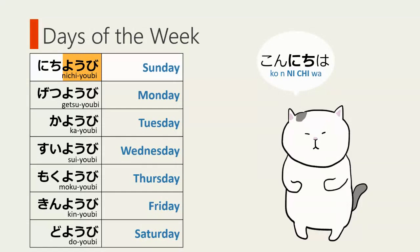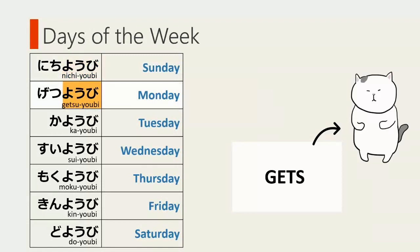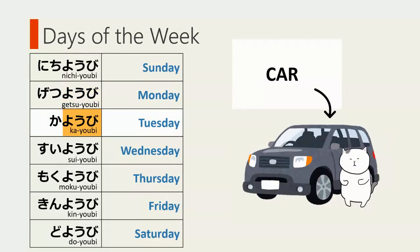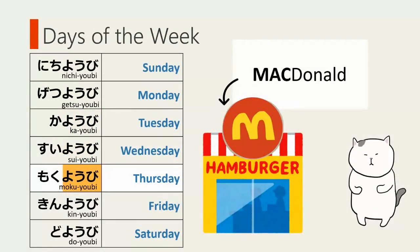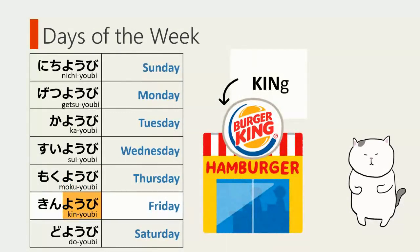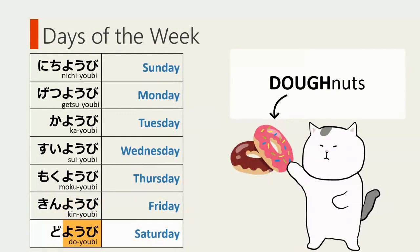Let's start from Sunday. Nichi is like konnichiwa. Getsu is like gates. Ka is like car. Sui is like swimming. Moku is like McDonald's — the sound of McDonald's is not exactly the same as moku, but it's close. Kin is like Burger King. Do is like doughnuts.